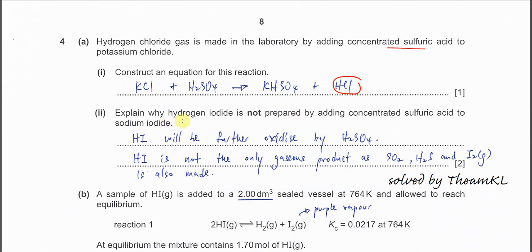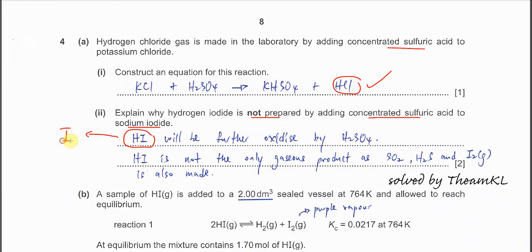Explain why HI gas is not prepared by adding concentrated sulfuric acid to sodium iodide. Because the HI will further react with the H₂SO₄. HCl will not further react with concentrated H₂SO₄. That's why this method is always used to prepare HCl. But to prepare HI, we cannot use concentrated H₂SO₄ with sodium iodide. HI will be further oxidized to iodine by H₂SO₄, and the H₂SO₄ is the oxidizing agent.